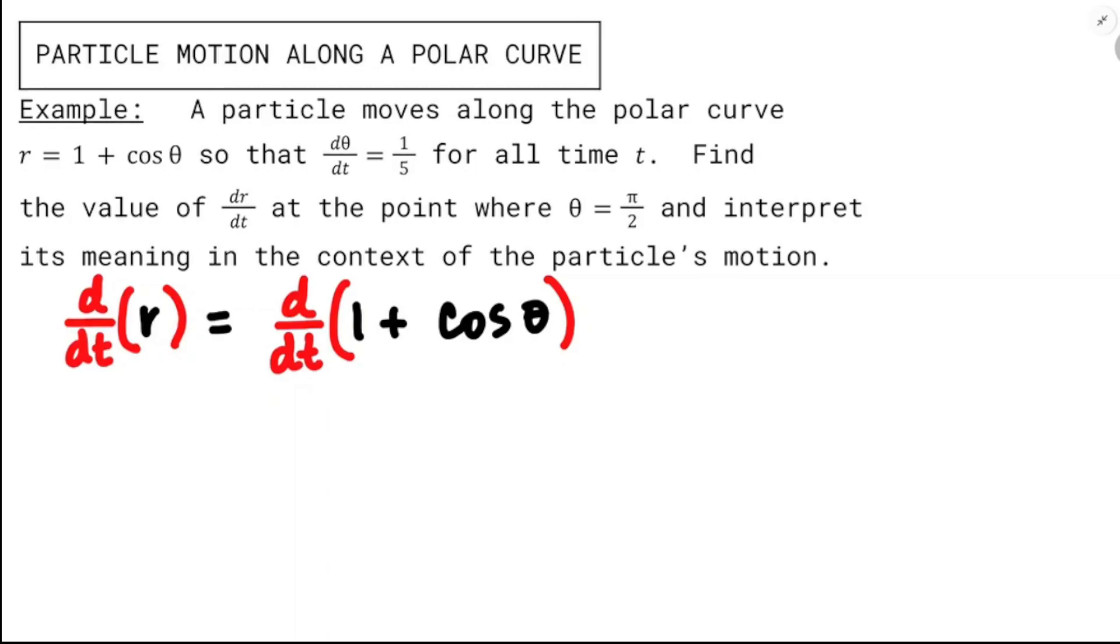When we're taking the derivative with respect to some variable that's not present in an equation like t, we have to assume that all the other variables depend on that variable. We know that r is going to be a function of t if we're finding the rate of change of it, and we also know that θ depends on t, because the particle's moving along the curve so that dθ/dt is one fifth. θ's increasing with respect to time.